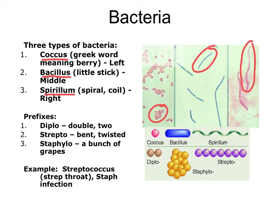When bacteria grow in pairs, it's called diplo — 'di' means two. If they grow in branching colonies, they are called strepto. You may have heard of strep throat, caused by streptococcus, which is how it got its name. The other type is staph or staphylo — staph infections are caused by staphylococcus. Those names give rise to the classification and naming system we apply to bacteria.